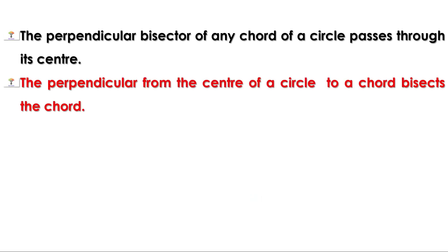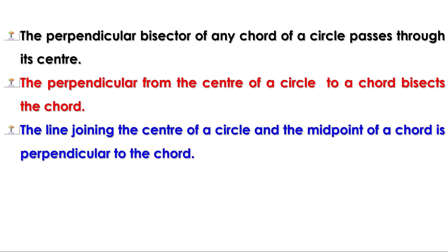The perpendicular bisector of any chord of a circle passes through its center. The perpendicular from the center of a circle to a chord bisects the chord. The line joining the center of a circle to the midpoint of a chord is perpendicular to the chord.